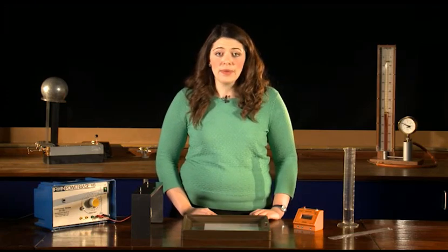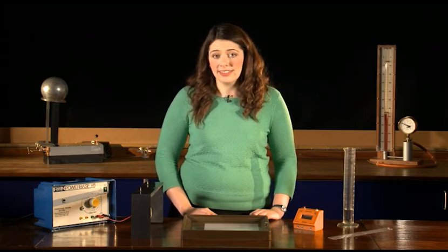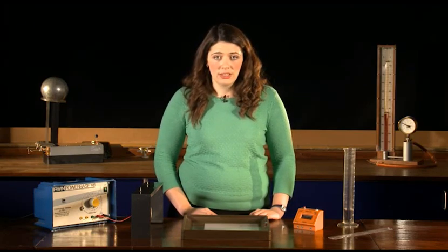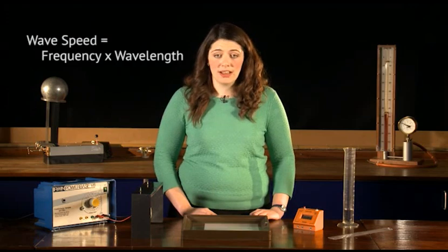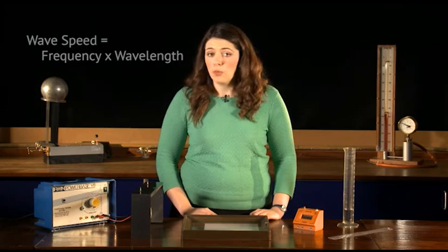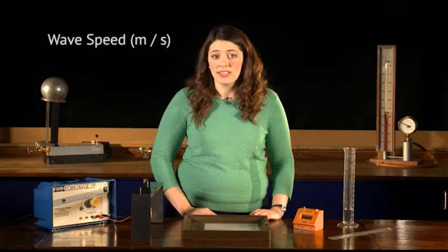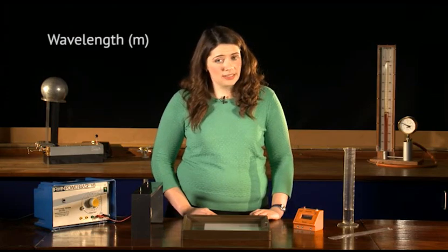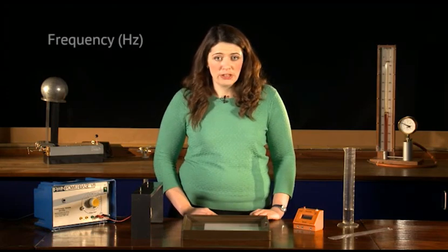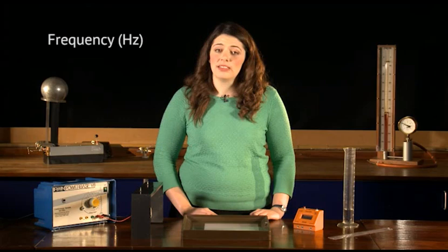Frequency is how many waves pass a point per second, and wavelength is the distance between two identical points on neighboring waves. These are all related in one equation: wave speed equals frequency times wavelength. Wave speed is measured in meters per second, wavelength is measured in meters, and frequency is measured in hertz, which simply means per second.